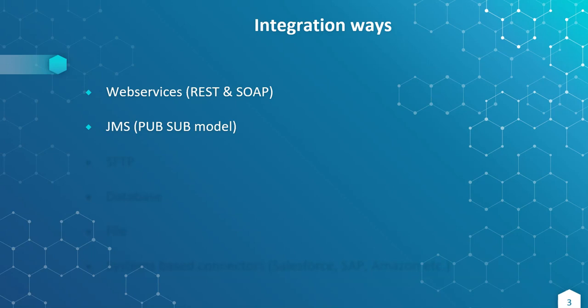We can also make integrations using JMS, the publish-subscribe model — like messaging systems such as WhatsApp. I can post a message into a JMS system, and that will be subscribed by the receiver to whom I want to send. And also SFTP — it's a simple file transport protocol. We can allow access over the internet to our system folder, so that the receiver can interact with the SFTP location and make the integration.